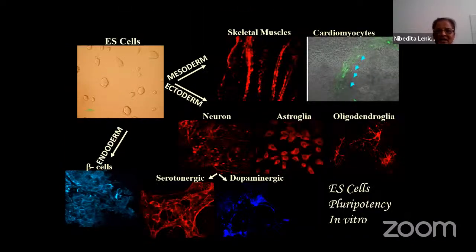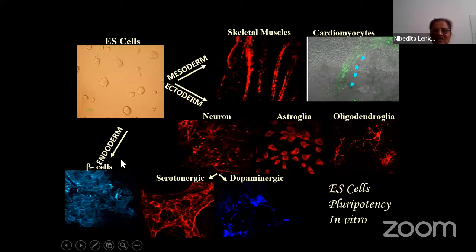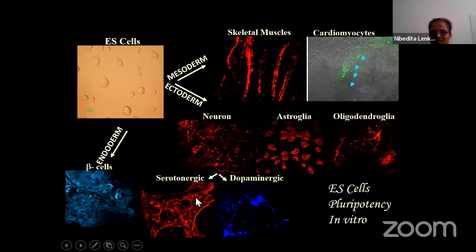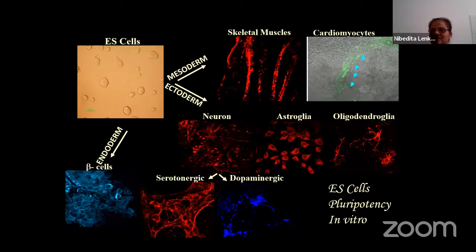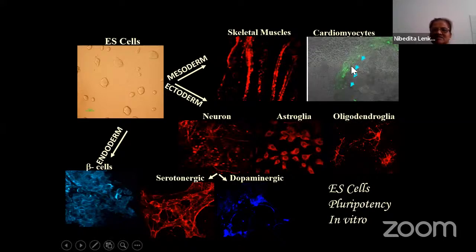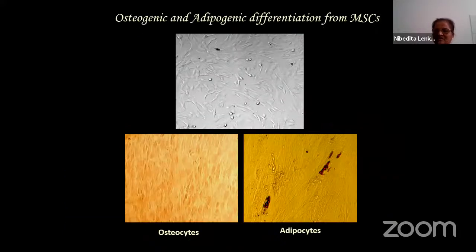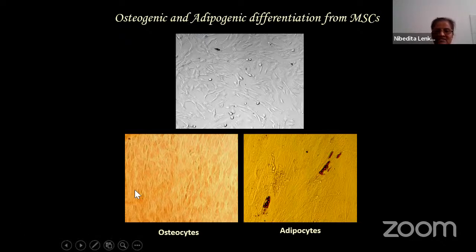This is a compendium showing how embryonic stem cells demonstrate their pluripotent nature by differentiating into ectoderm, mesoderm, and endoderm. From ectoderm: neural cells are multipotent, giving rise to different neural types like dopaminergic and serotonergic neurotransmitter-releasing cells. In Parkinson's disease, dopaminergic neurons degenerate - replenishing degenerated cells with healthier ones is the therapeutic strategy. Not only neurons but also astrocytes and oligodendrocytes can be obtained. From mesoderm: skeletal muscles and cardiac muscles. From endoderm: pancreatic islet cells. Mesenchymal stem cells give rise to osteocytes (bone cells), adipocytes (fat cells), and chondrocytes.